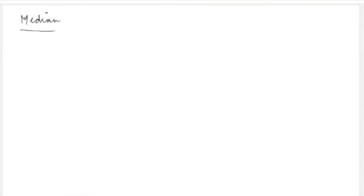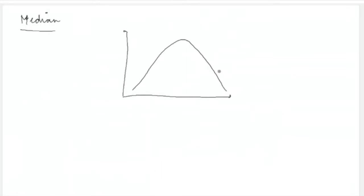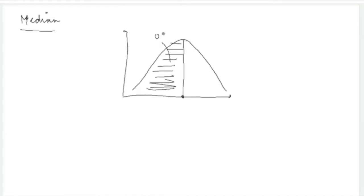Next is the median of a distribution. The median is the middle value of a given distribution — a point such that the area to the left of it is 0.5. That point is called the median of the given distribution.